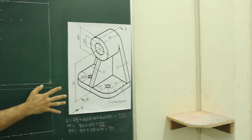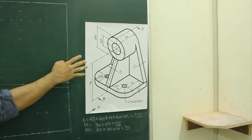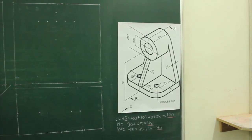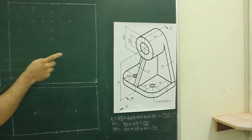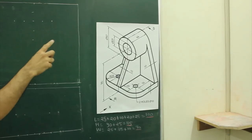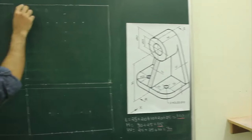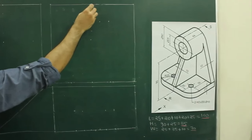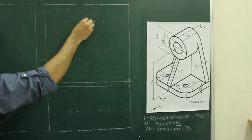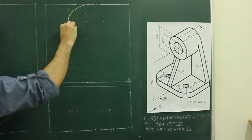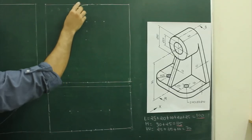The height is 90 plus 25 and the width is 70, that is 25 plus 35 plus 10. Now we will start with the front view. In the front view, if you see the main object, they have given diameter 50. So we will take half of this length, go down by 25, and draw radius 25.